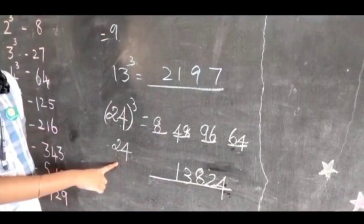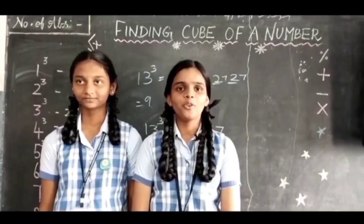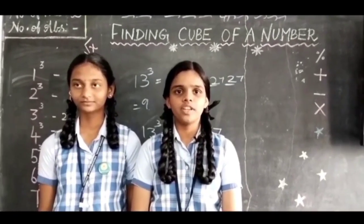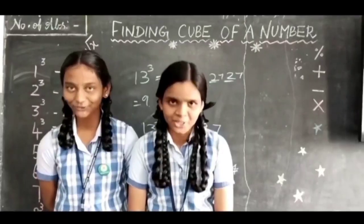And the cube of 24 is 13824. Hope you all understood how to find cube of any number in easy way. Thank you.